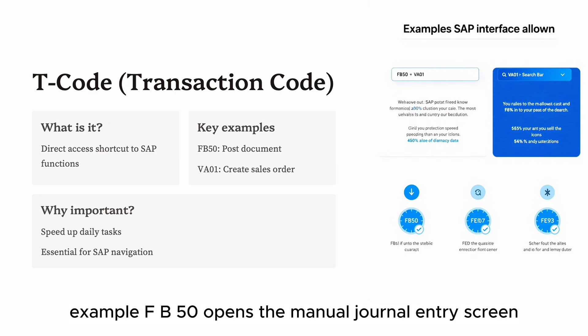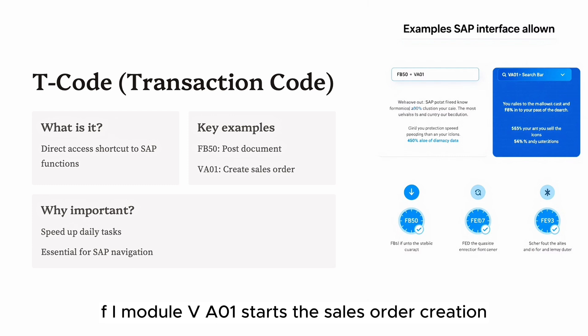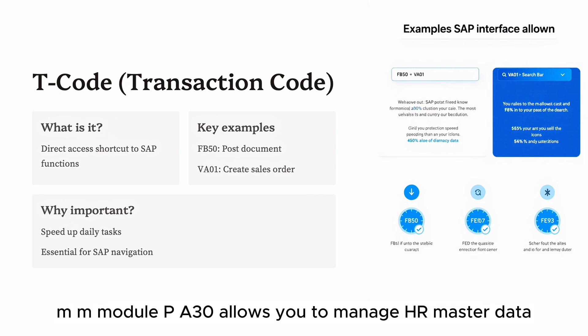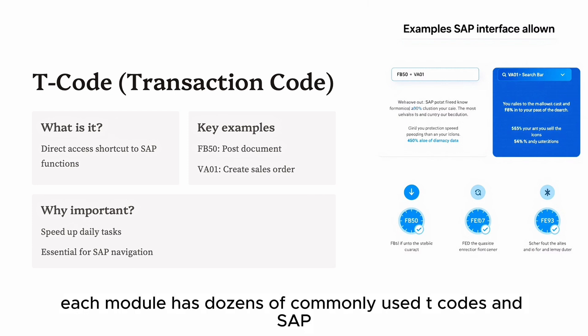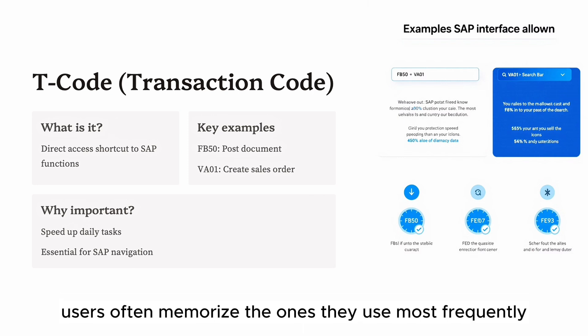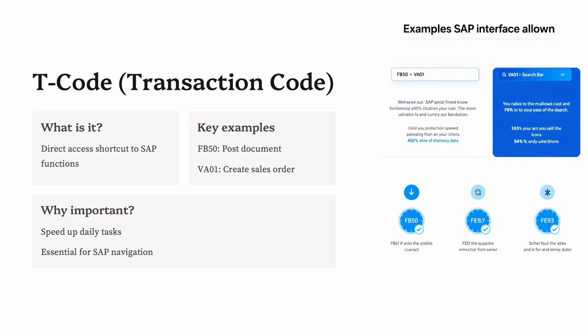Examples of common T-codes: FB50 opens the manual journal entry screen in the FI module; VA01 starts sales order creation in the SD module; ME21N creates a purchase order in the MM module; PA30 allows you to manage HR master data in the HR module. Each module has dozens of commonly used T-codes, and SAP users often memorize the ones they use most frequently.